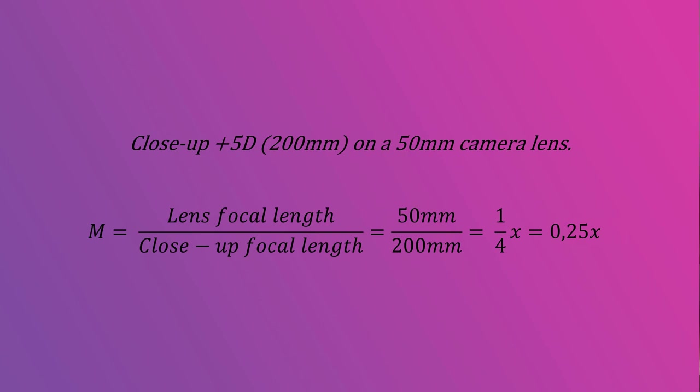Let's take a 50 mm camera lens and a 5D close-up lens, which has a 200 mm focal length, and let's see what happens. The magnification equation becomes M equals camera focal length divided by close-up lens focal length. So we have 50 mm divided by 200 mm, which gives us one-quarter of an X or 0.25X.